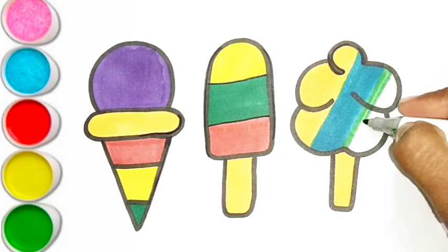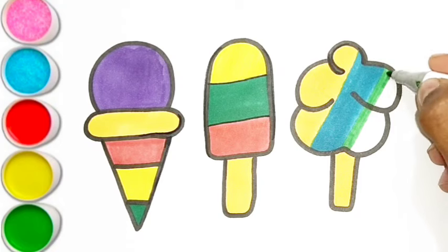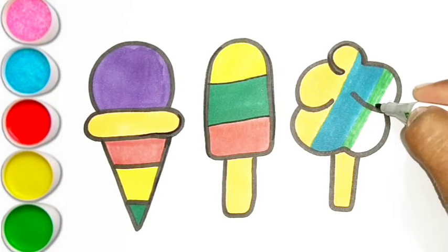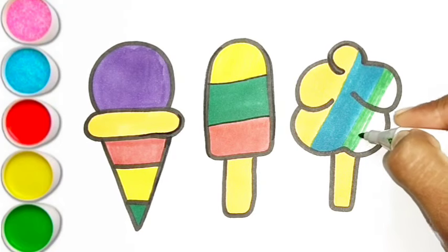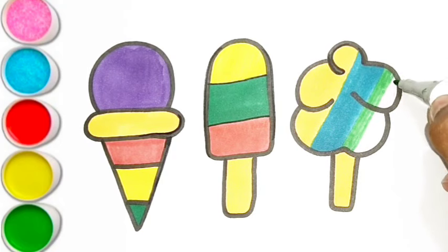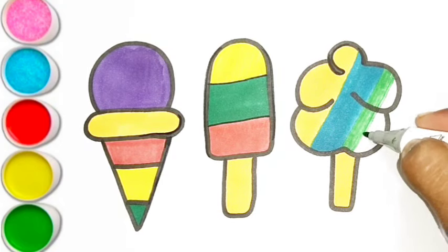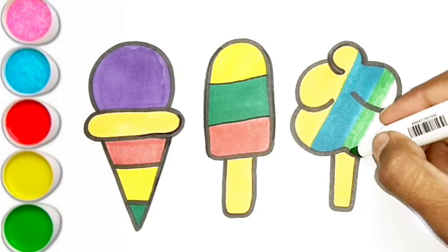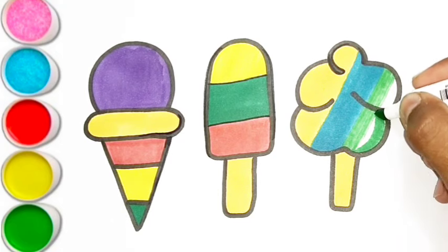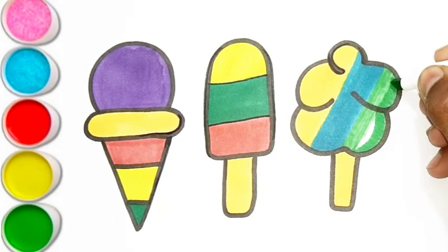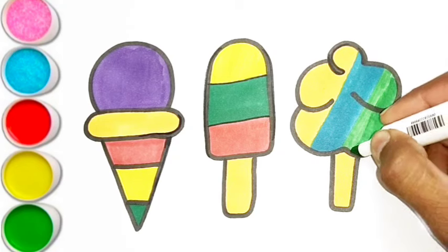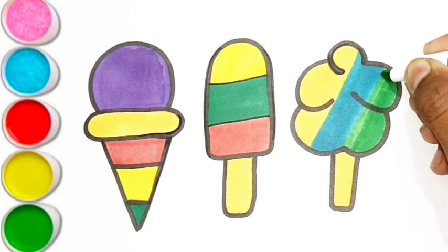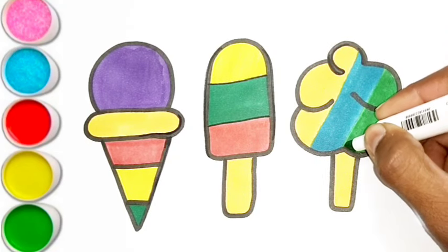O is for orange. O, o, orange. P is for pet. P, p, pet. Q is for queen. Q, q, queen.